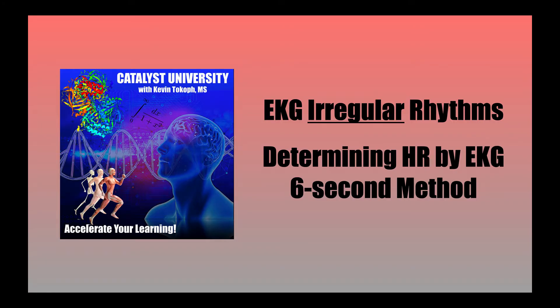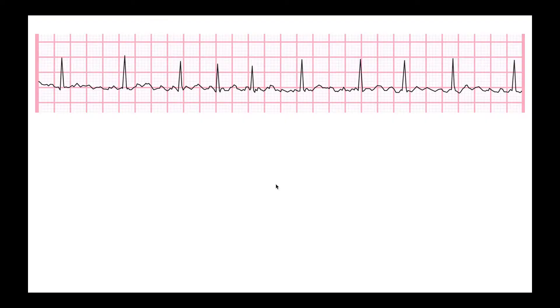But when we have an irregular rhythm, all bets are off and we have to use a different method. This method is sometimes called the six-second method. We're going to talk about how you do that in this video. Here's our EKG pattern right here. This is actually atrial fibrillation, which is pretty much 100% of the time irregular.